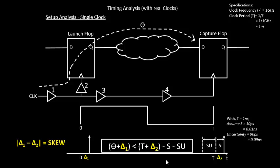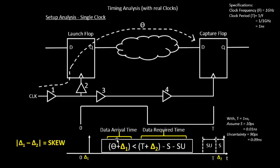Any circuitry on the chip satisfying this equation is ready to work at 1 GHz. Anything violating it involves a term called slack. The right-hand side is called the data required time — it tells the designer the minimum amount of time the circuitry needs to function at 1 GHz. The left-hand side is the data arrival time. Data arrival time should be less than data required time, so subtracting data required time minus data arrival time should give a positive value.